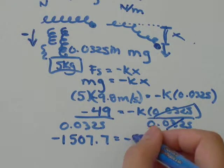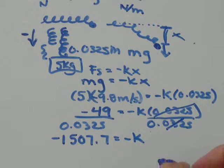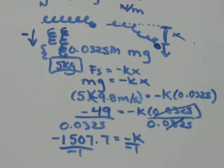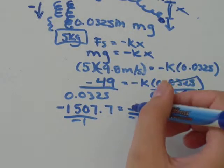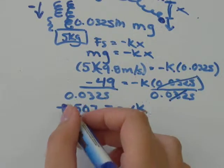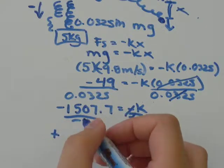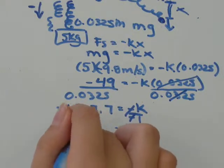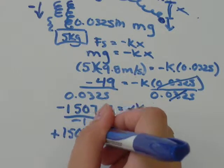these will cancel out, negative k. So, we'll just divide by negative 1 on both sides, so that the negatives will cancel out. And we'll get k is equal to negative divided by negative is positive 1507.7. And the spring constant is measured in newtons per meter.